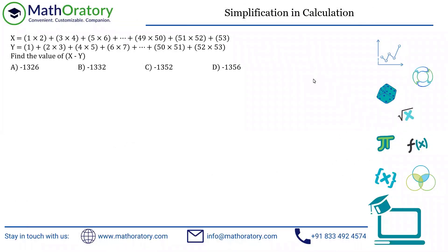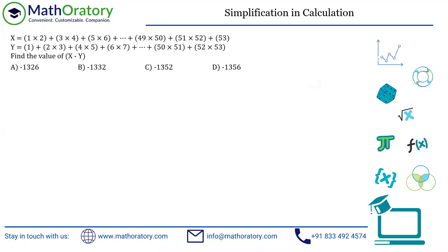This is essentially a calculation problem. The key is how we view the difference. We are looking for x minus y, where x is one expression and y is another, and we need to subtract them in the smartest way possible. Let us write x and y separately. One thing to observe first: the '1' in y and the '53' in x have nothing multiplied to them, so let's leave those separately.